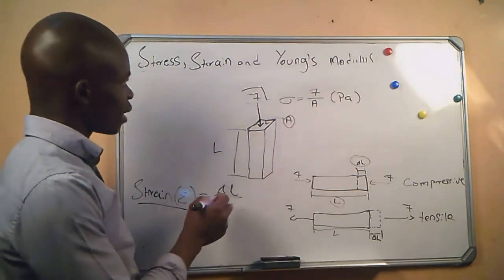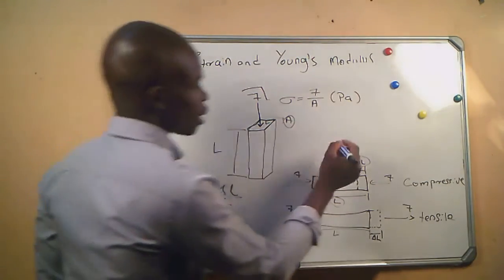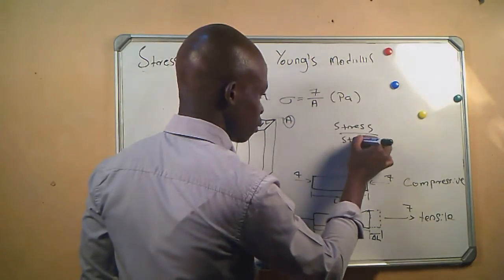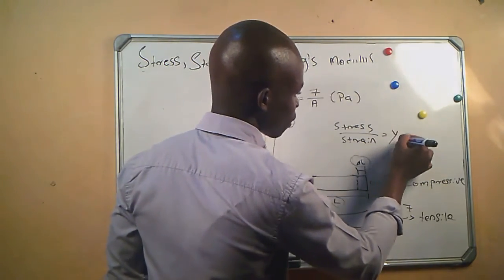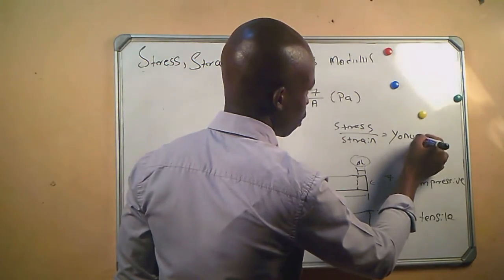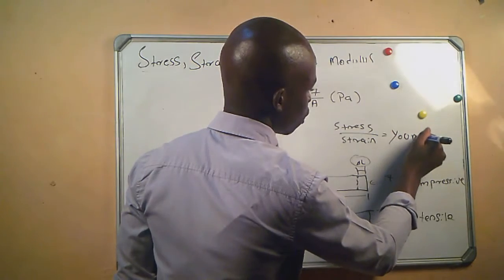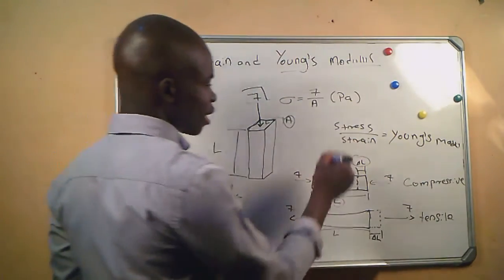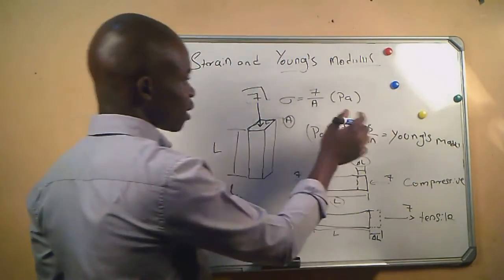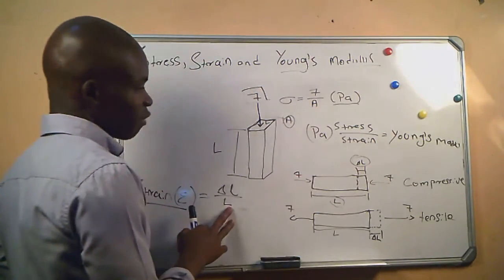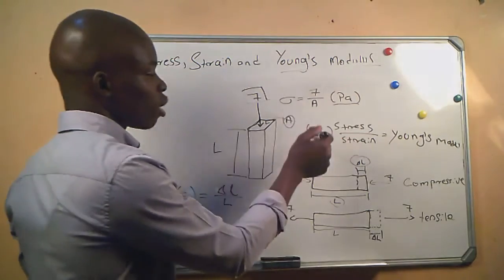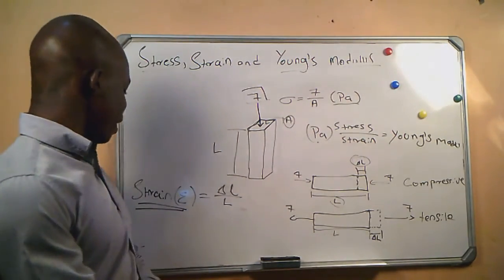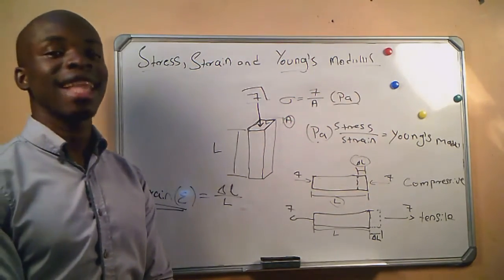The ratio of stress divided by strain is called Young's modulus. It is given in Pascal, since the SI unit for stress is Pascal and strain has no SI unit, so Young's modulus takes the SI unit of stress. Strain is defined as the change in length per unit length of a material.